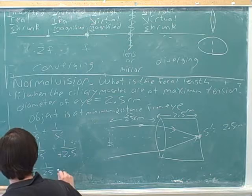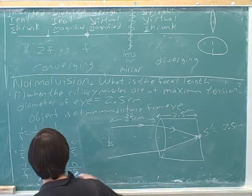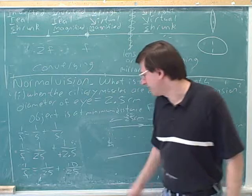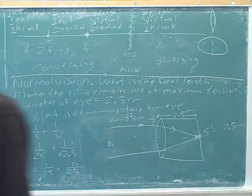So you're getting a common denominator. We can change 1 over 2.5 to 10 over 25 to give us a common denominator.